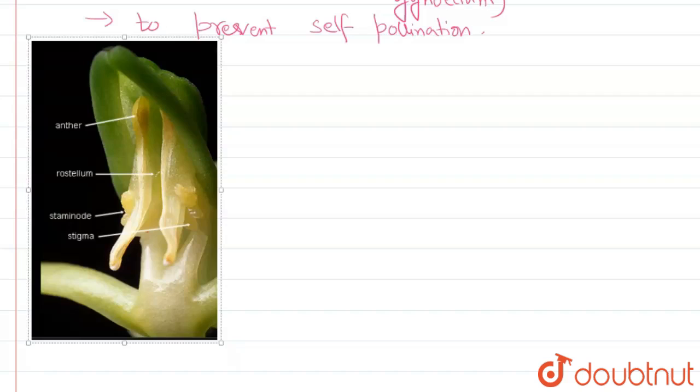You can see we have the stigma here - this is the stigma as pointed out in the diagram. And this is the anther.